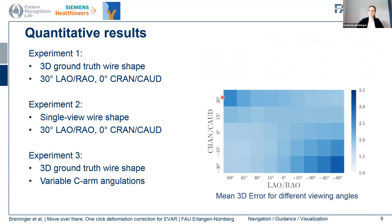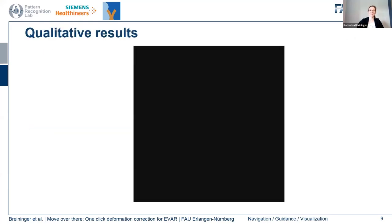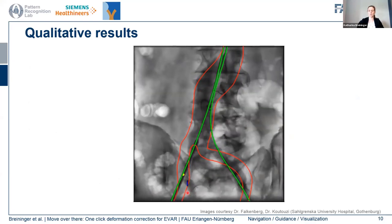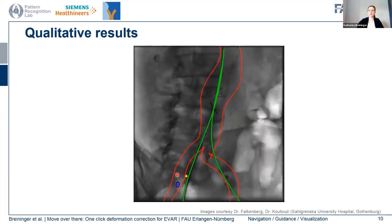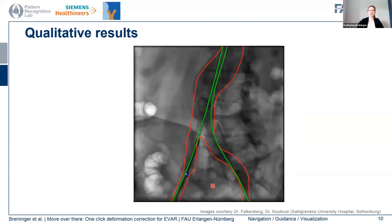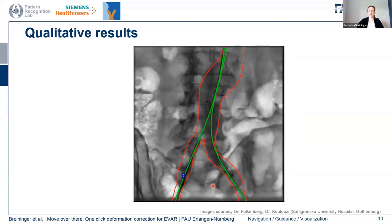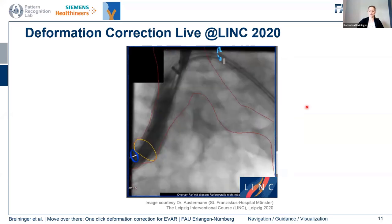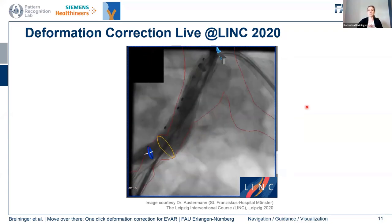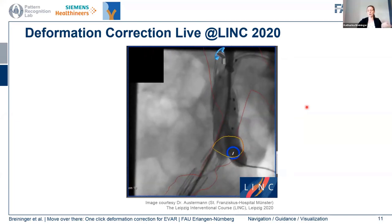Only for very oblique or very strong cranio-caudal angulations do we see a larger error. Qualitative results nicely highlight how the workflow operates. You can see here an undeformed overlay with a considerable mismatch between the intraoperative and preoperative positions. With our proposed approach, we can nicely correct this by simply clicking on one point, and the deformation stays correct even when the angulation of the C-arm system is changed. This is also demonstrated in a real intraoperative case where our approach, combined with other methods developed during my PhD, works very nicely.